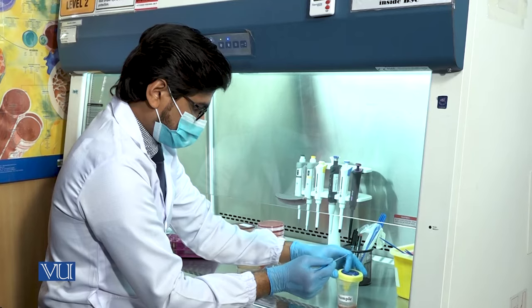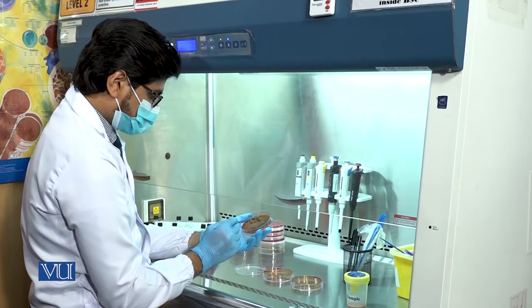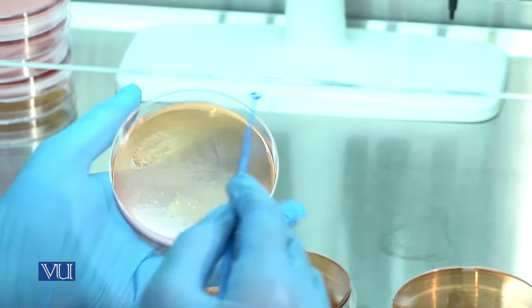Now using the inoculating loop, inoculate the bacterial sample onto the solid media using quadrant method. First streak one loop full of organisms back and forth over area 1.